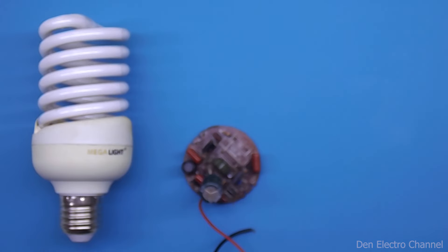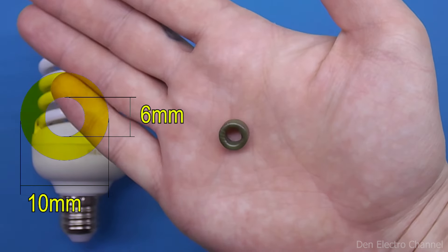Transformer T2 swings on this small ring. You can see its dimensions on your screens.